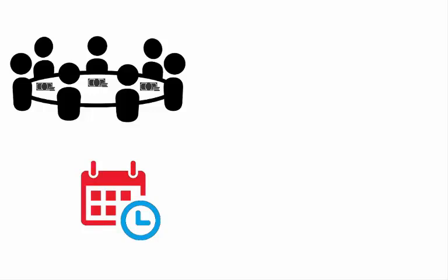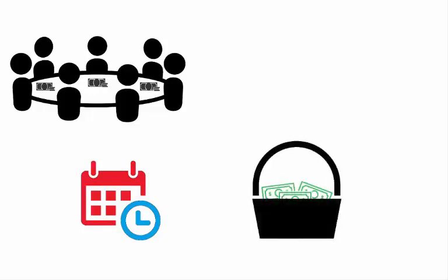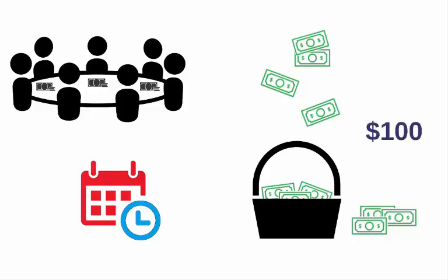At each meeting, members make a set deposit into the communal pot. If there are 10 members and each contributes $10, the pot reaches $100. One member receives the $100, and group members then take turns receiving the pot at each meeting.